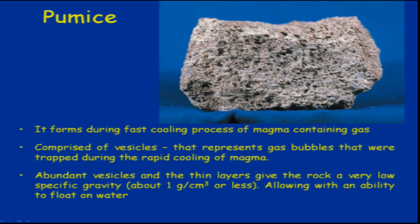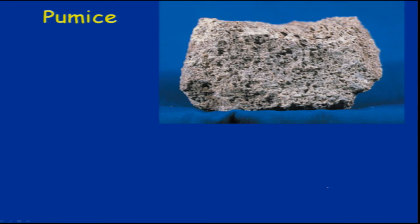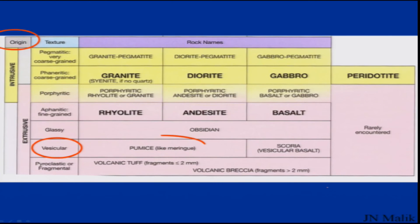Abundant vesicles and a thin layer give the rock a very low specific gravity — less than 1 g/cc. This makes pumice a very light rock with the ability to float on water. This is one very important characteristic of pumice, which is classified as a vesicular extrusive rock.